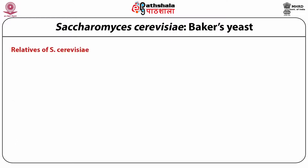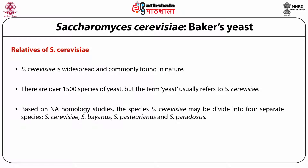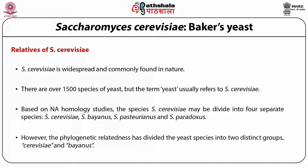S. cerevisiae is widespread and commonly found in nature. There are over 1,500 species of yeast but the term yeast usually refers to Saccharomyces cerevisiae. Based on DNA homology studies, the species may be divided into four separate species: S. cerevisiae, S. bianus, S. pasteurinanus, and S. paradoxus. However, phylogenetic relatedness has divided yeast species into two distinct groups: cerevisiae and bianus.